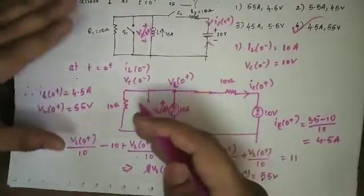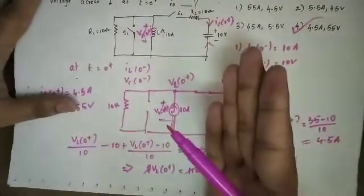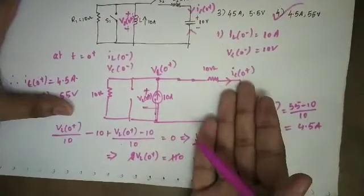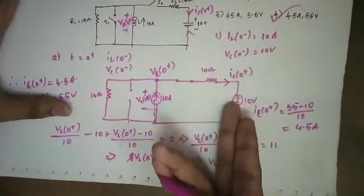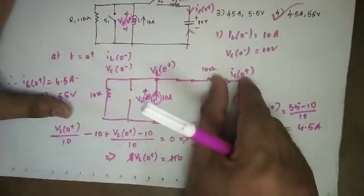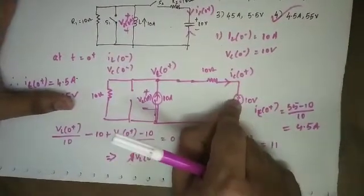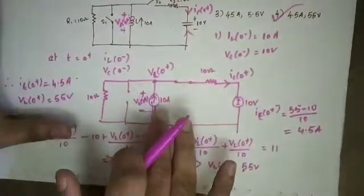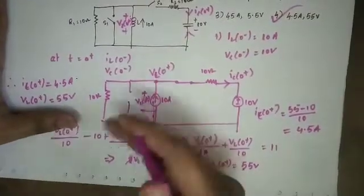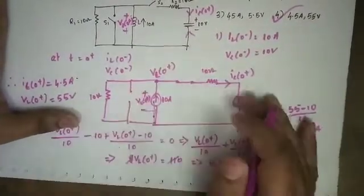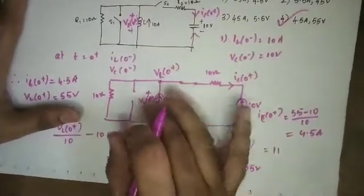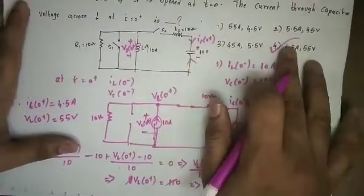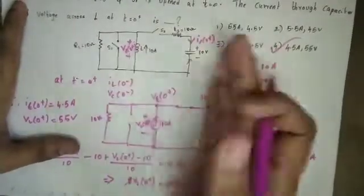This inductor will deliver energy from the inductor. Considering the current direction entering the capacitor, the inductor discharges into the capacitor. If you reverse the capacitor polarity, VL becomes minus 55V, which is not the option. This is a charging and discharging basis problem. The magnitude is what matters here.